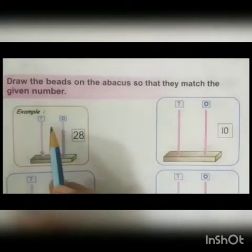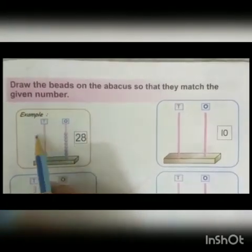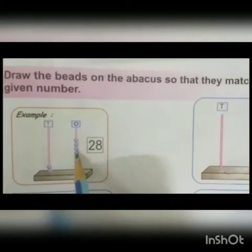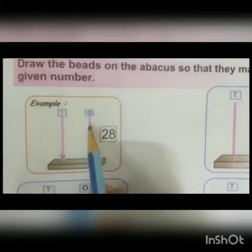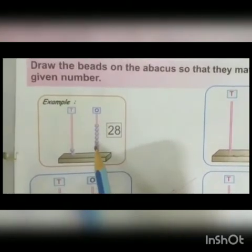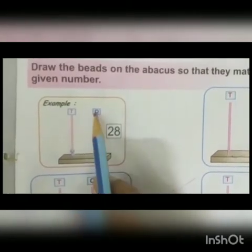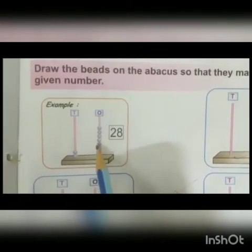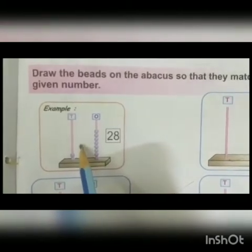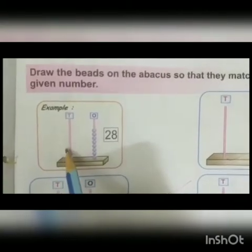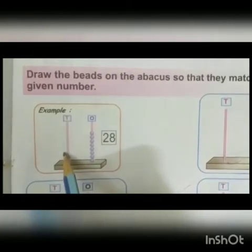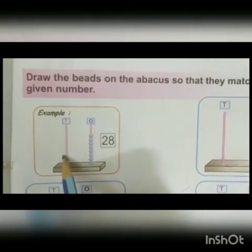For example, this is your abacus. On the right side of the abacus, O stands for ones. And on the left side of the abacus, T stands for tens.